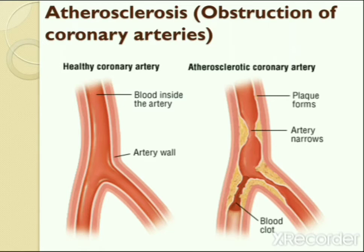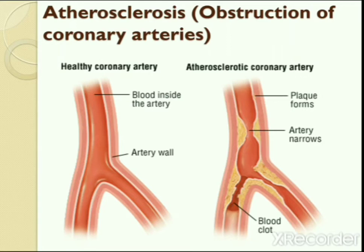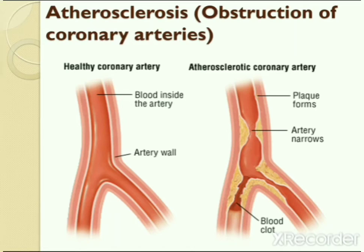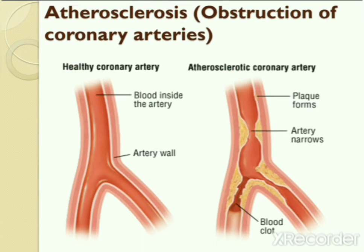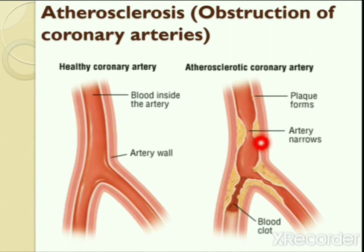The question arises: what is the reason for coronary artery disease? Coronary artery disease is usually caused by a buildup of fatty deposits on the walls of arteries around the heart. The most usual reason is obstruction of coronary arteries due to atherosclerosis, which hampers blood supply to the heart muscle resulting in ischemia. In this picture you can see a healthy coronary artery and an atherosclerotic coronary artery. This buildup is known as plaque formation, which causes reduction in blood flow to the heart muscle.